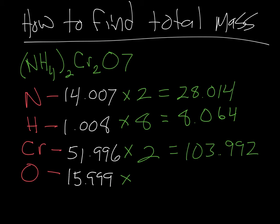And then I have seven oxygens. I'm sorry, I didn't write that seven as a subscript, but I have seven oxygens. So I'm going to multiply this by seven, and that gives me an answer of 111.993.